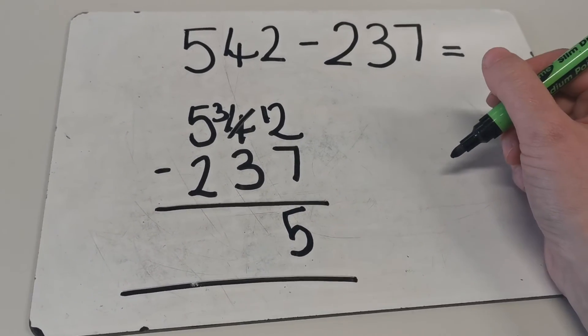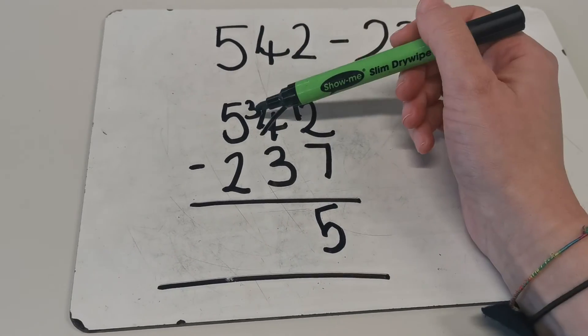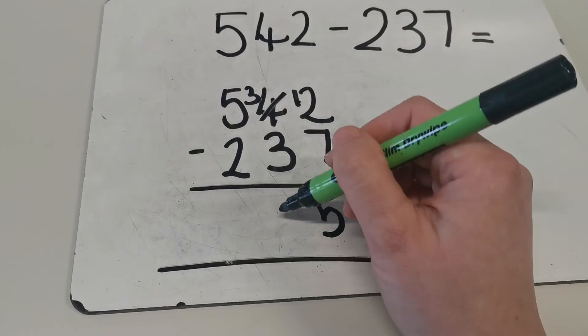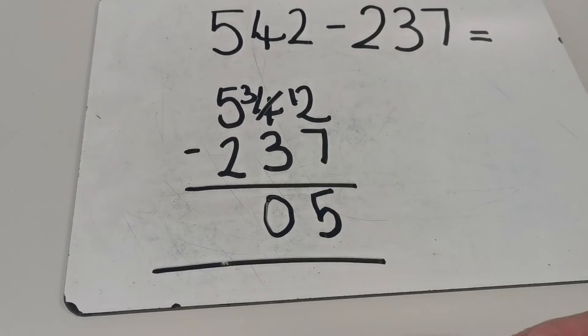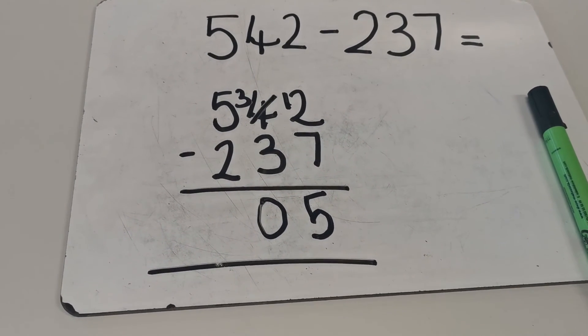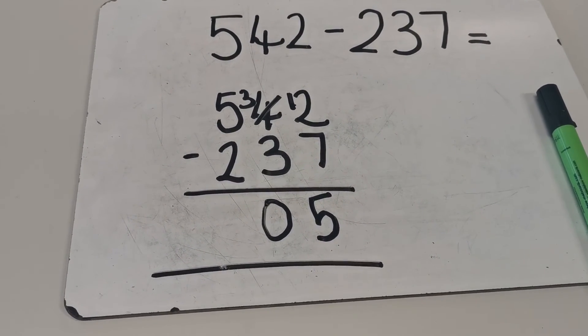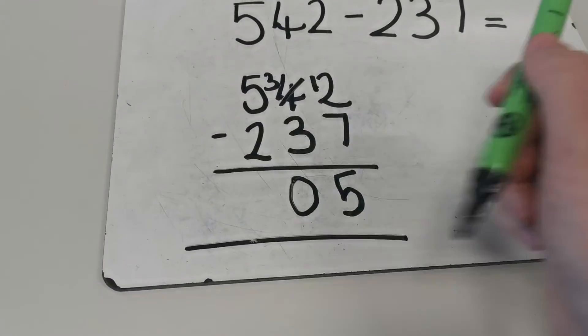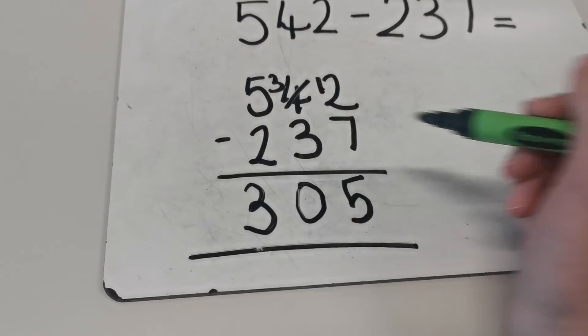Now I've got to do 30 subtract 30, so three tens subtract three tens. I'll have no tens left because I had three and now I've just taken them away. Then I'm left with 500 subtract 200, so five subtract two, I'm left with three. So as you can see, I've got the same answer, so 305.